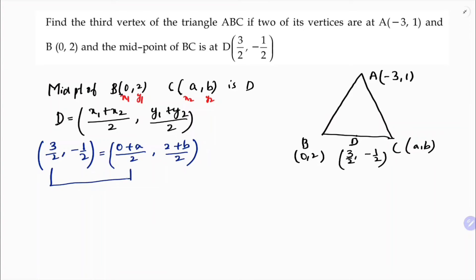Equate the x-coordinates with x-coordinates and y-coordinates with y-coordinates. So 3/2 = (0 + a)/2. The 2s cancel, so the value of a is 3.